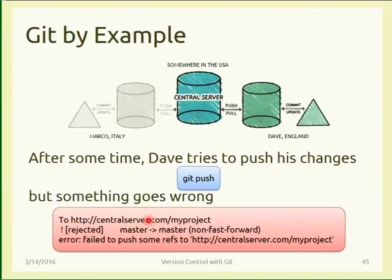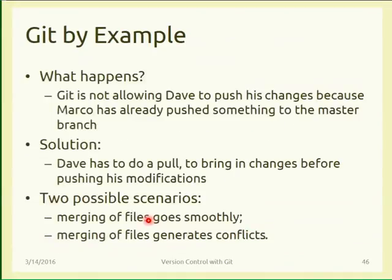Git warns you that you cannot push anything because you are not on the latest version of the project. So you have to do a pull first. In doing a pull you have two possible situations. The first is that Git merges the two files automatically — maybe you edited main.py line two and the other person edited line 11, so no problem: line 11 is added to your file. In some other cases maybe you are both editing the same line, line three — then you have a conflict.